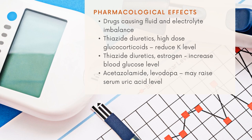Pharmacological effects may cause fluid and electrolyte imbalances requiring monitoring of lab values. For example, thiazide diuretics or high-dose glucocorticoids might reduce potassium levels. Diuretics and estrogen might increase blood glucose levels, and acetazolamide or levodopa might raise serum uric acid levels. Patients given these medications need to have their lab values monitored accordingly.